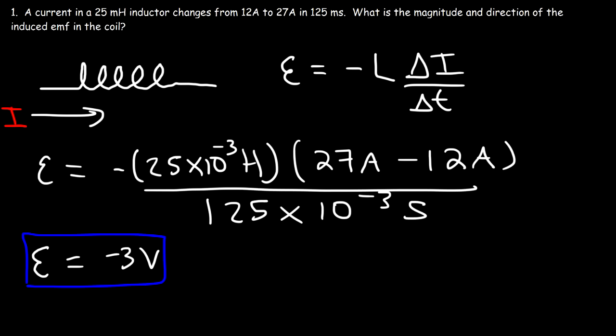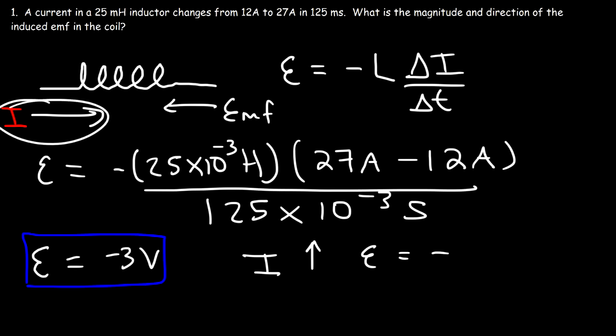The direction of the induced EMF: because the current increases, the induced EMF is negative, meaning it opposes the direction of the original current. Anytime the current increases, the coil generates a current that opposes the original current, so the induced EMF will be in the opposite direction. The net effect is to decrease the voltage that this current has as it passes through the coil.